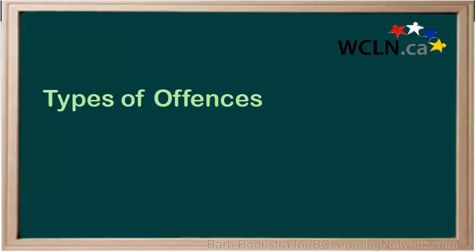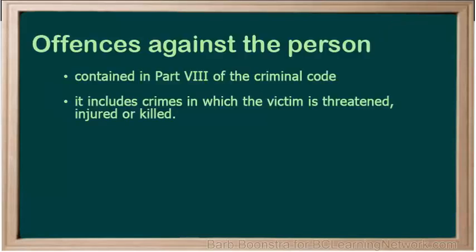There are several different types of criminal offences that we need to discuss. Offences against the person are contained in Part 8 of the Criminal Code. This includes crimes in which the victim is threatened, injured or killed. Violent crime is actually decreasing in Canada, but it is considered very serious and therefore carries with it the stiffest penalties.